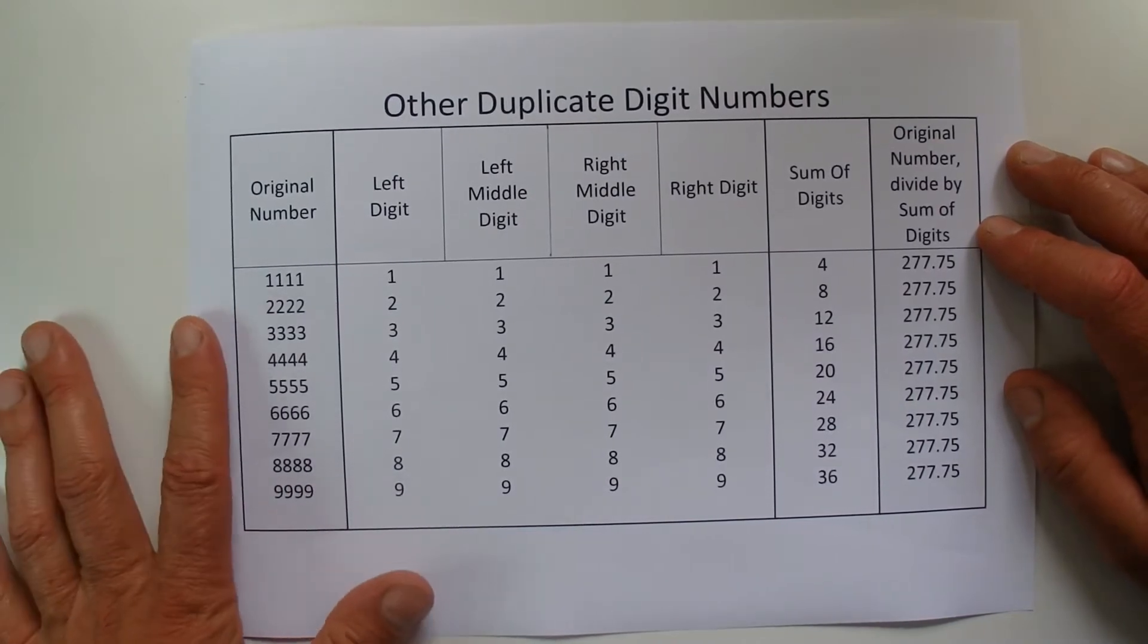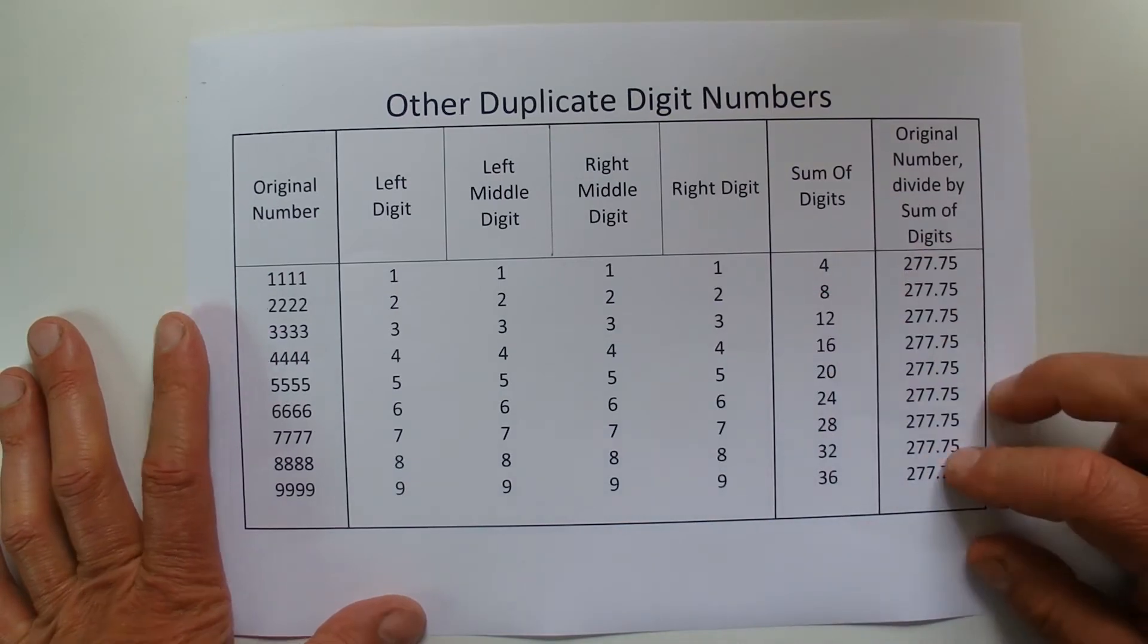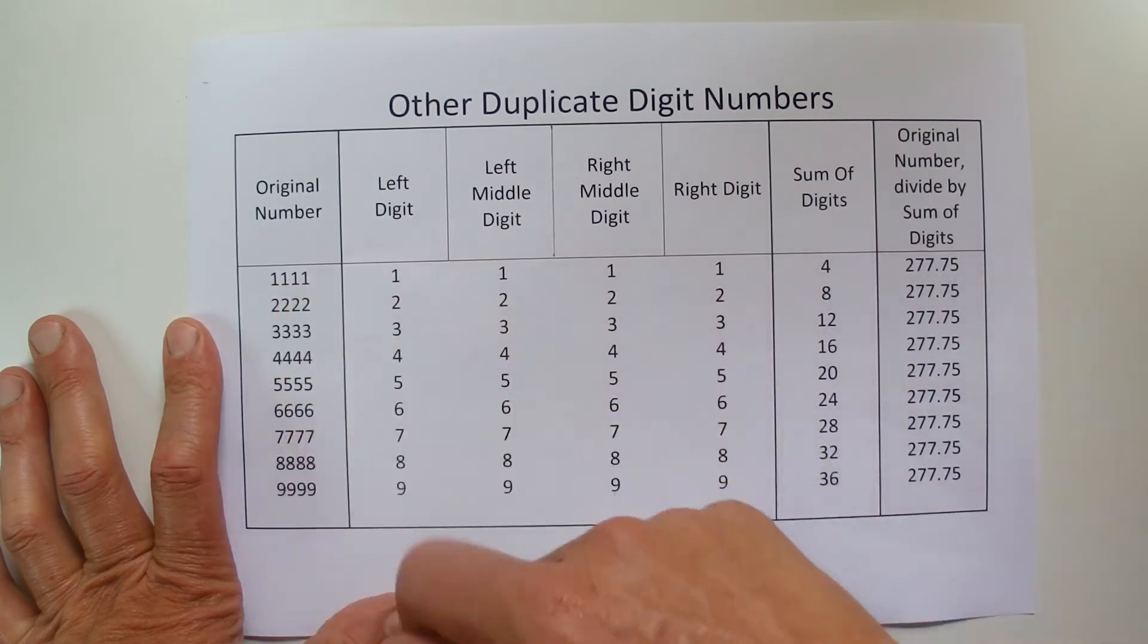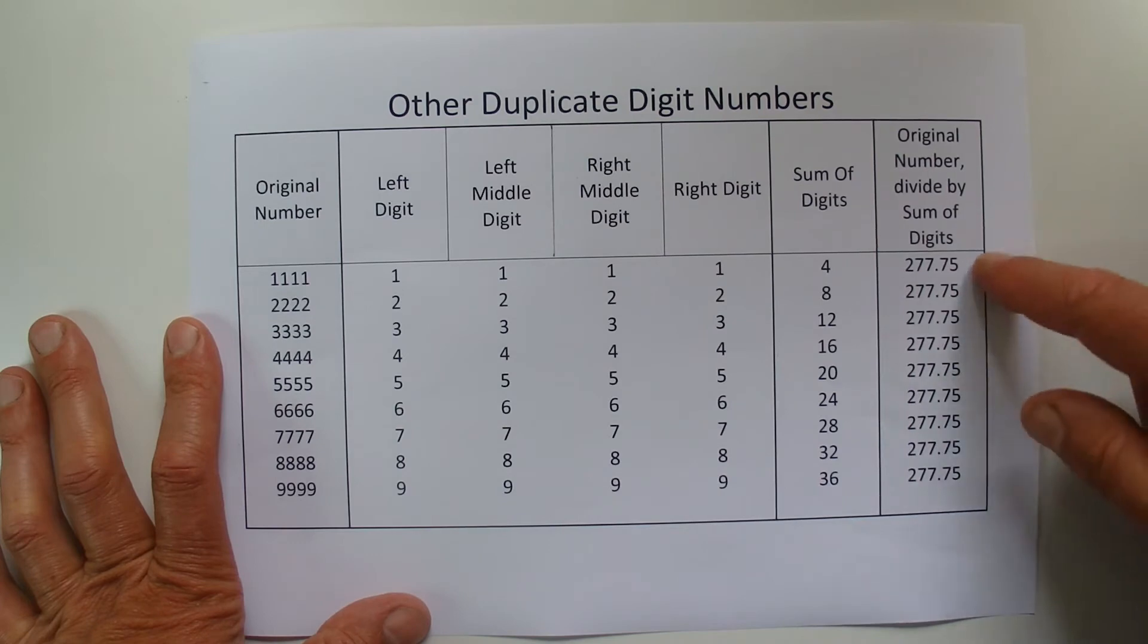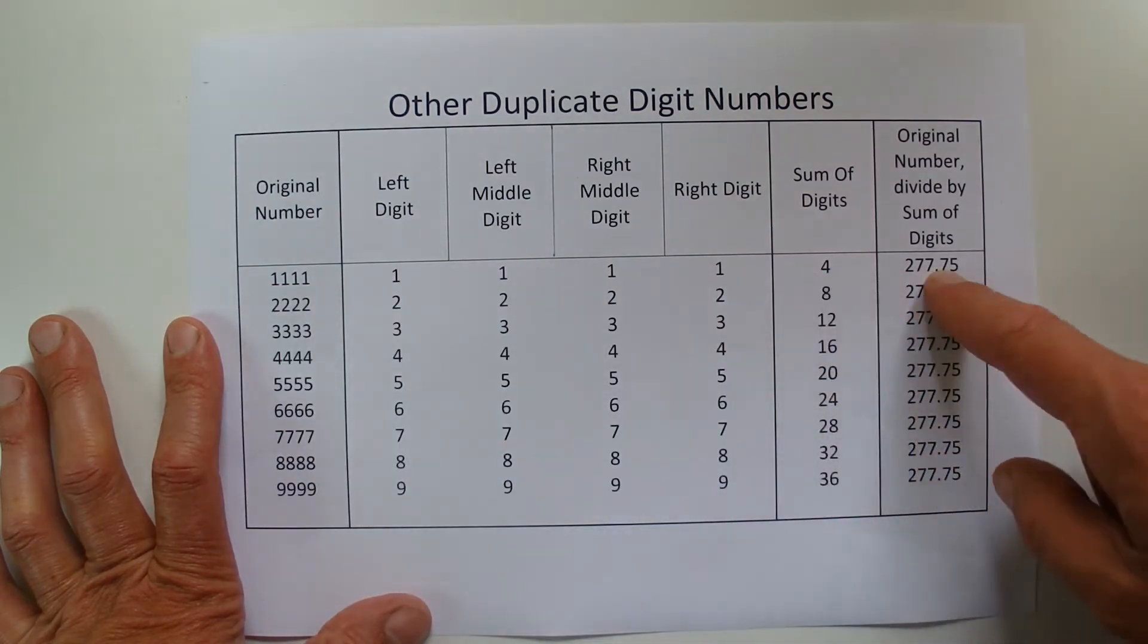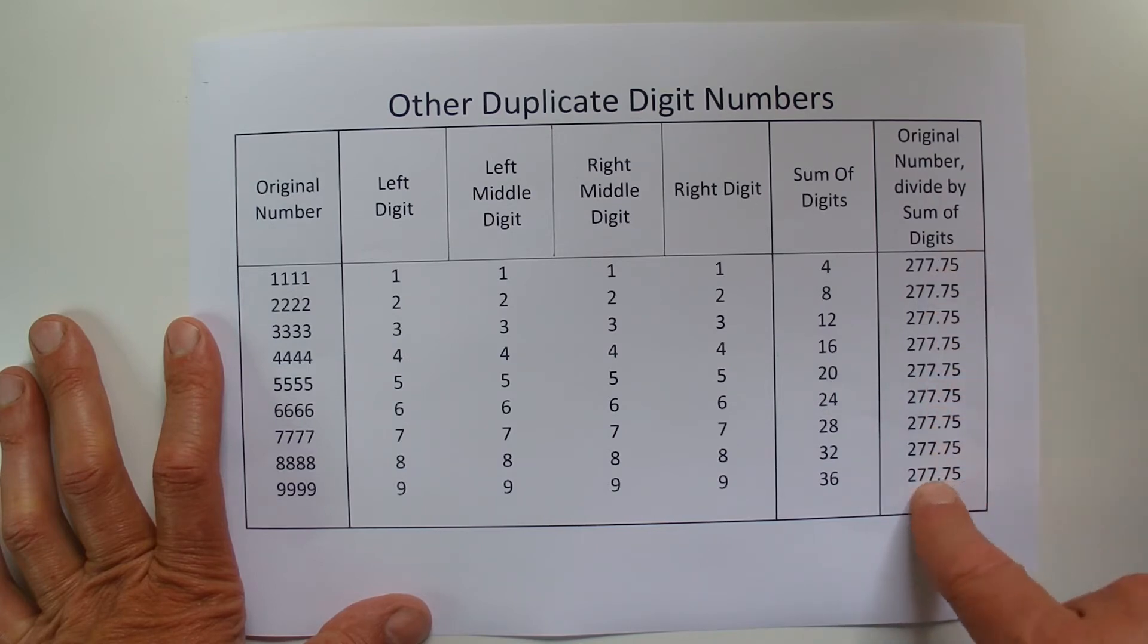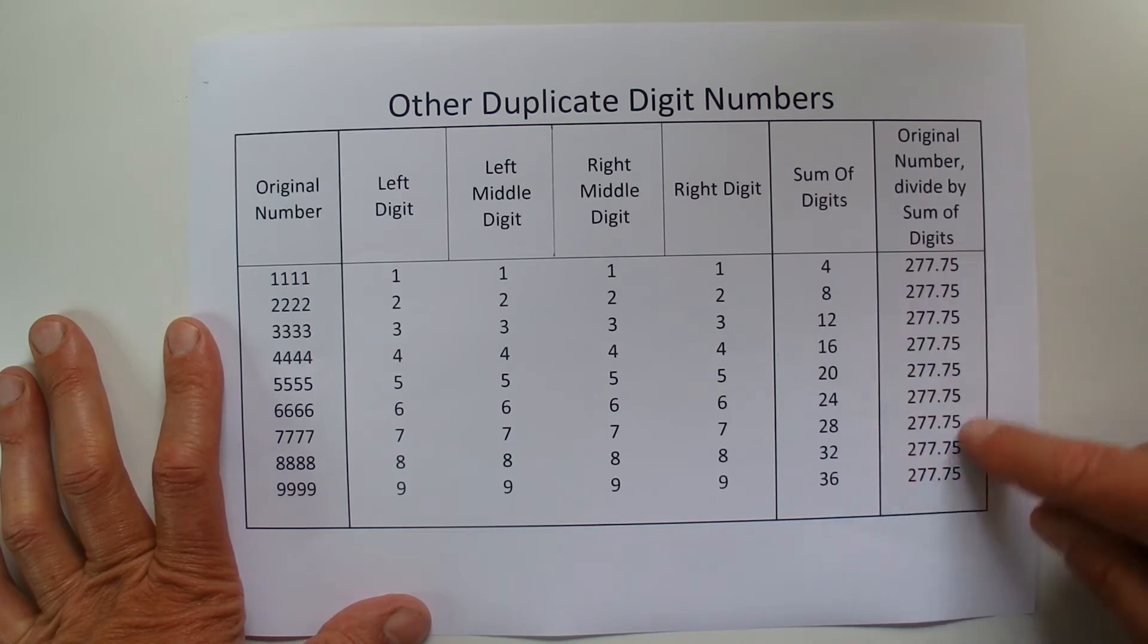So to help you understand how this rule works, I'm going to show you some other duplicate digit numbers, and in this case, it's the four-digit number. So we've got 10 four-digit numbers where all the four digits are the same. And you can see here that when you apply that same principle, add up the sum of the digits, take the original number, divide by the sum of the digits, and the answer in this case will always be 277.75. So it's not going to be 37, but in this case, all the answers are going to be the same.